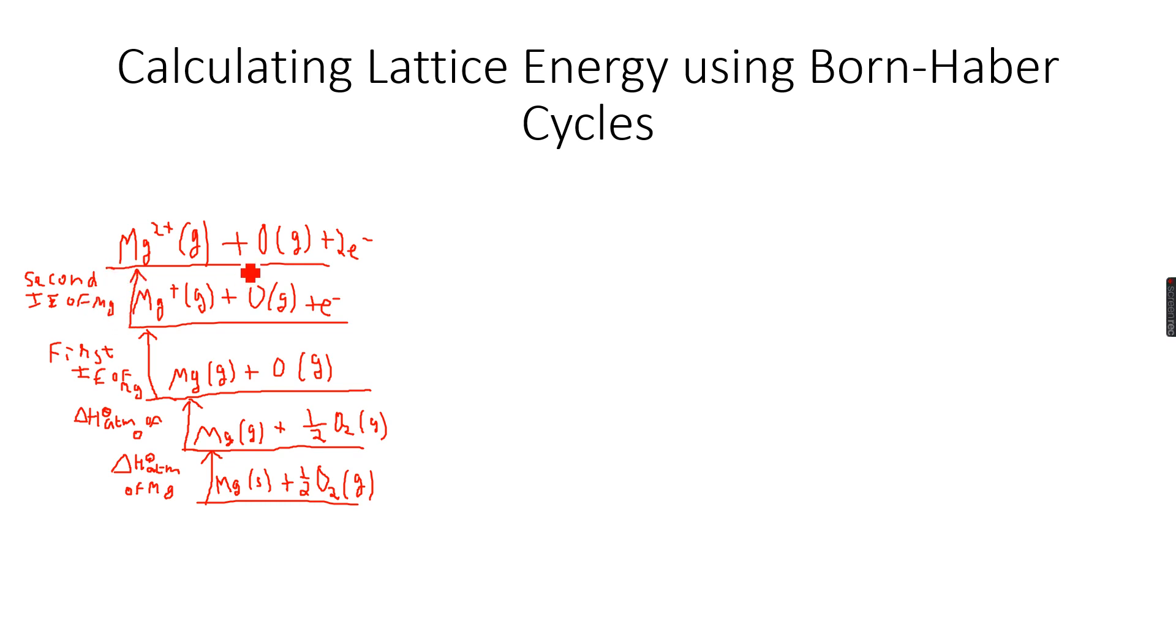Now I go down because electron affinity this time because the oxygen is gaining. So we have Mg2+ gas plus O gas plus electrons. So this time we have negative oxygen. We have one negative oxygen ion, O- ions plus electrons. It has taken one mole of electrons. So this is the first electron affinity, first EA of oxygen.